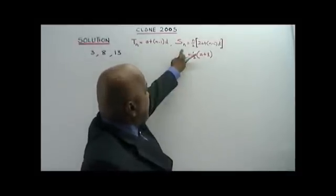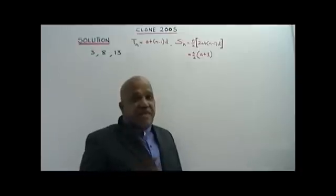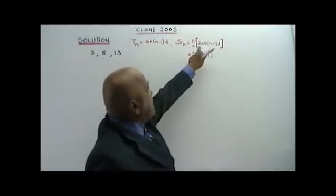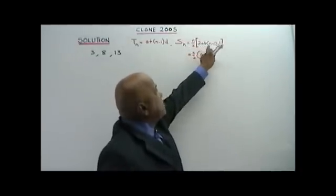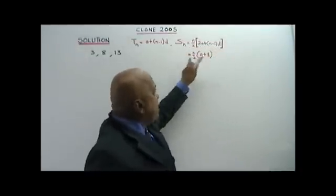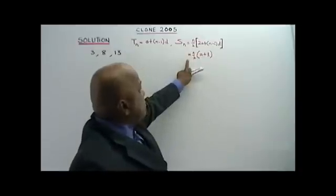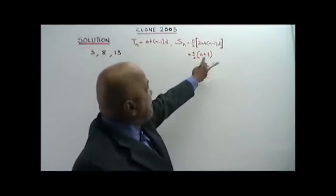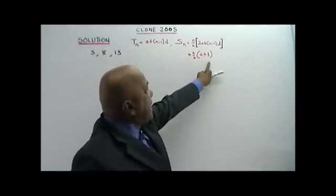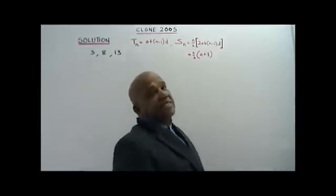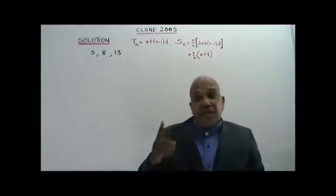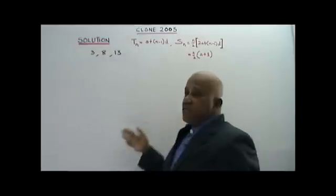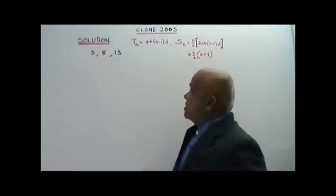And Sn, that is the sum of the first N terms, equals N over 2 bracket 2A plus N minus 1 times D. Or, it's also equal to N over 2 times A plus L, where A is the first term and L is the last term.